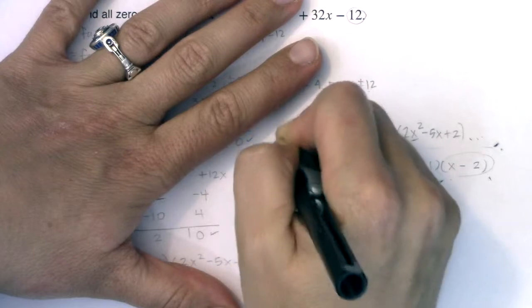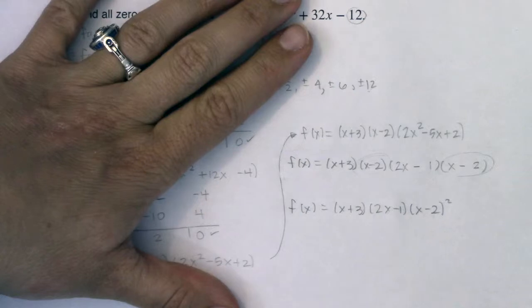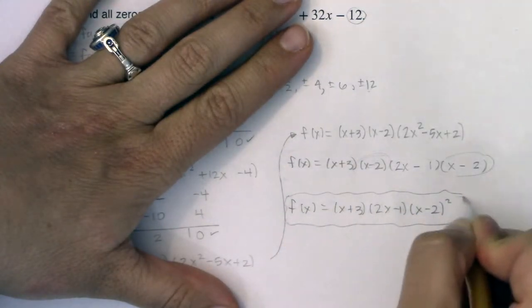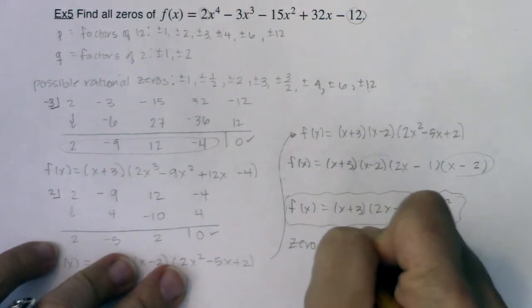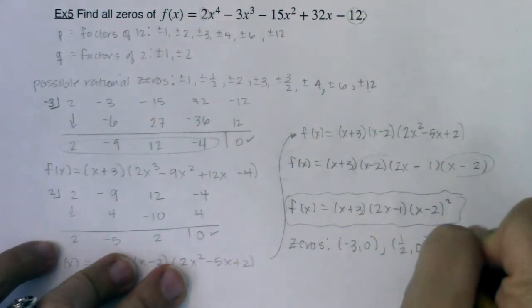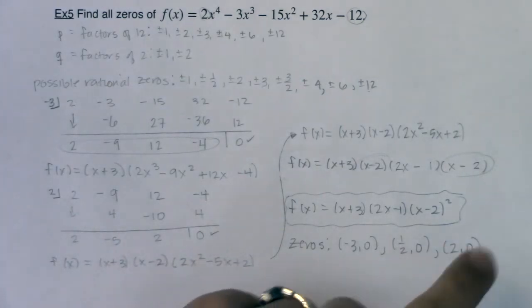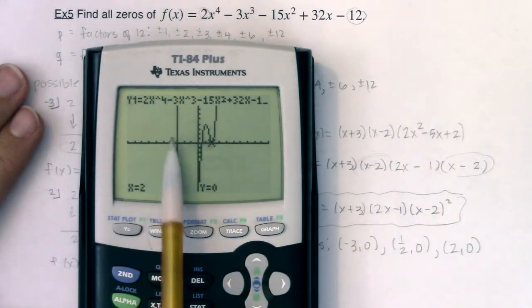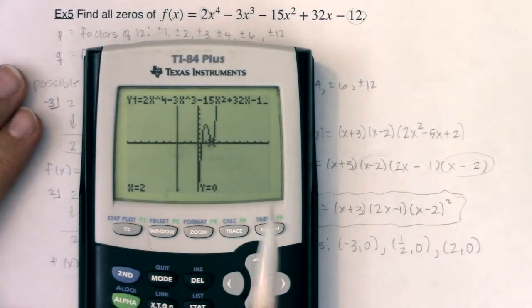Even though I wasn't asked, here is the factored form of my polynomial and my zeros. I only have three of them. I have negative 3, 0, 1 half, 0, and then 2, 0. I have a repeated zero with a multiplicity of 2, and I don't need to list it twice. And that lines up with my graph. I see my x-intercept at negative 3, I see it at 1 half, and I see it at 2.